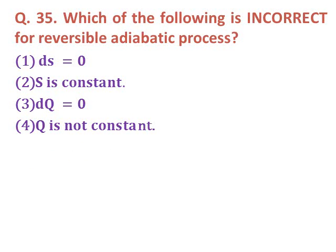Question thirty-five: Which of the following is incorrect for a reversible adiabatic process? Option one: dS equals zero. Option two: entropy is constant. Option three: change in heat equals zero. Option four: Q is not constant. Option four is the incorrect statement because for a reversible adiabatic process, Q is constant and dQ equals zero.